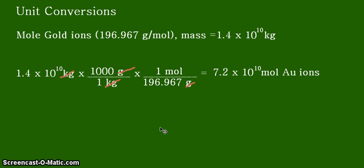Now AU is a symbol of your gold, chemical symbol of your gold. Alright. Now remember before you do report your final answer, you always have to look back at the given and determine the correct number of significant figures.